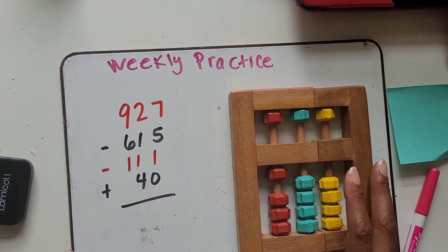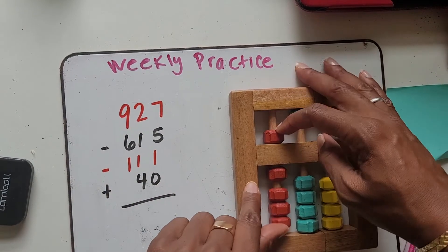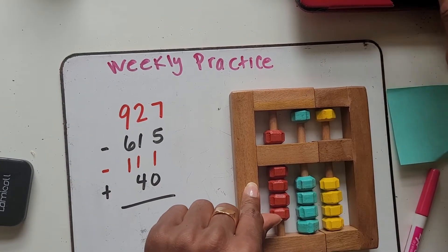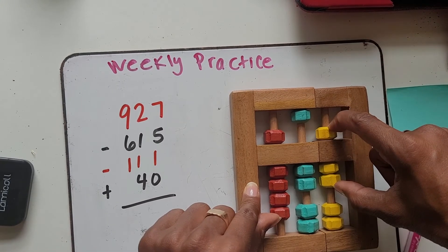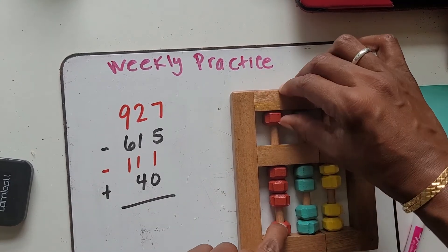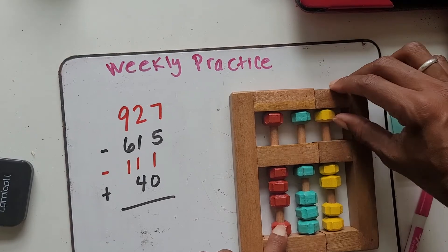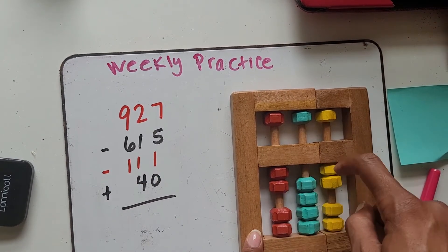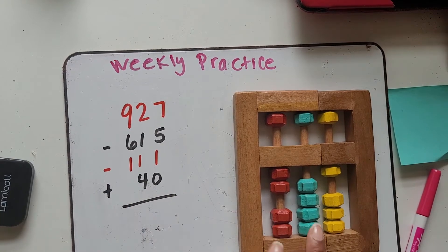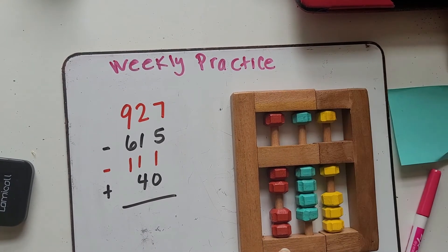Pause if you need to, work the problem out. So I'm going to add nine hundredths, two tens, and seven. Then I'm going to take away six hundred, one ten, and five. And then I'm going to subtract again, one hundred, one ten, and one. Then I'm going to add four tens. Is that your answer?